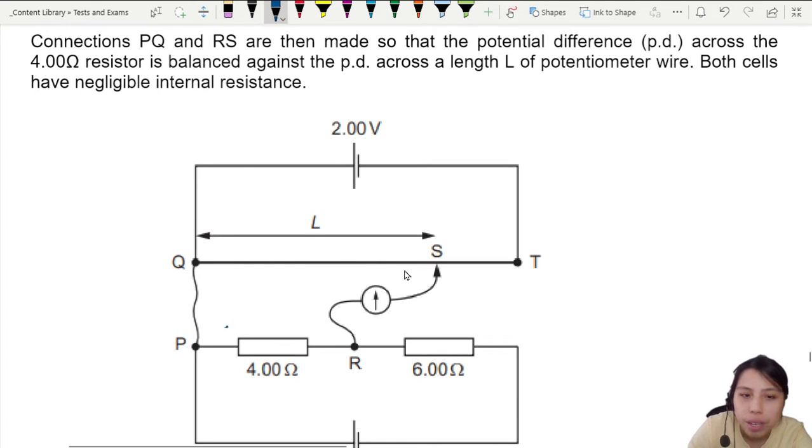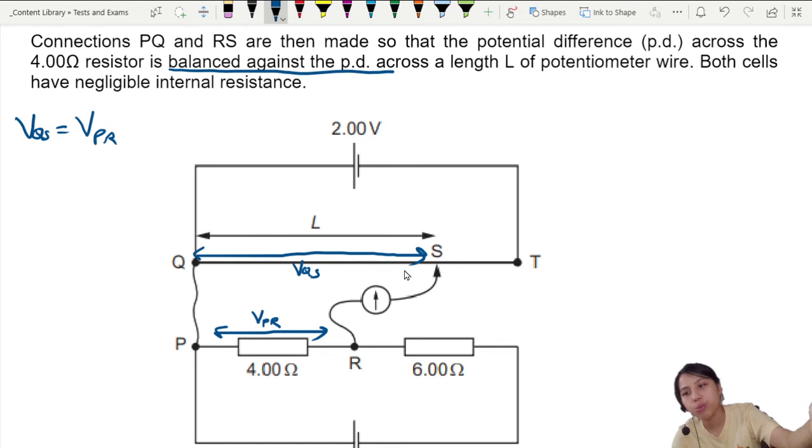That tells me your potential difference here, I'm going to call this VPR, the voltage. It has to be the same as the potential difference across this resistance wire VQS. VQS has to be the same as VPR because you are balancing the PD. That's how potentiometers work.